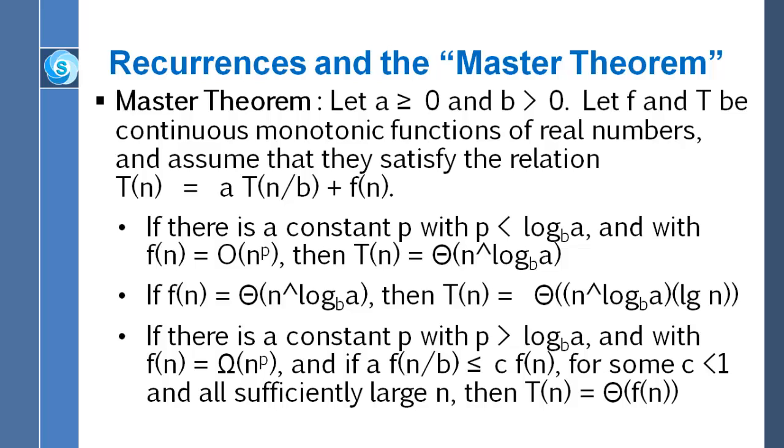You could basically set it to 0 and have t of n equals a times n over b. Because f of n is growing so slowly that it doesn't have any impact. The dominant term would be a times t of n over b, and the f of n would be insignificant. In that case, you wind up with t of n being capital theta of n raised to a power, the power's base b log of a.